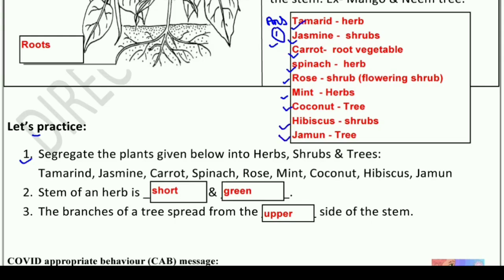Question number two: the stem of an herb is — the answer is: the stem of an herb is soft and green. And the third question: the branches of a tree spread from the upper side of the stem — जो trees की branches होती हैं, वो stem के upper side पर होती हैं।